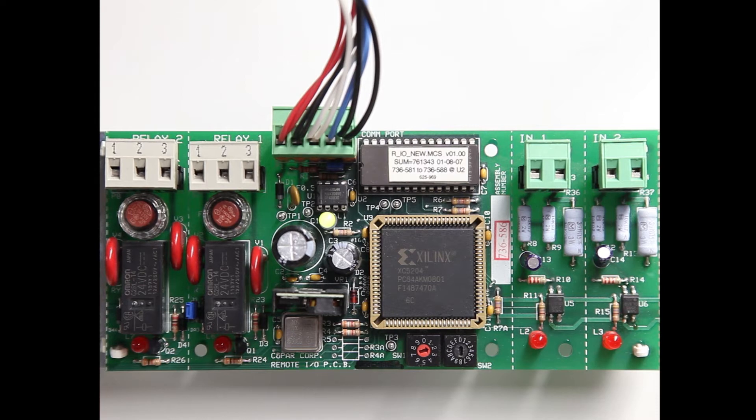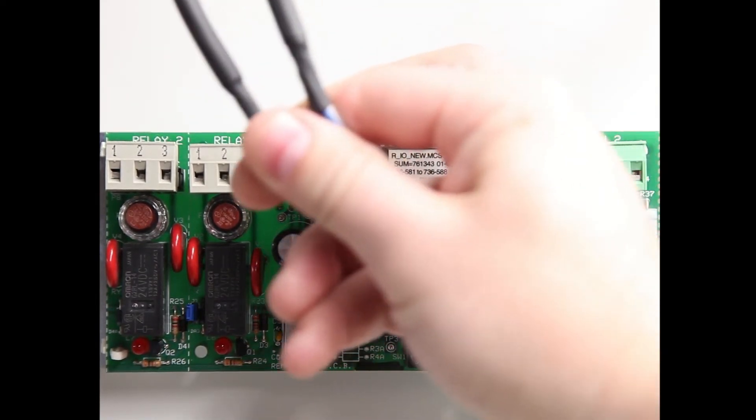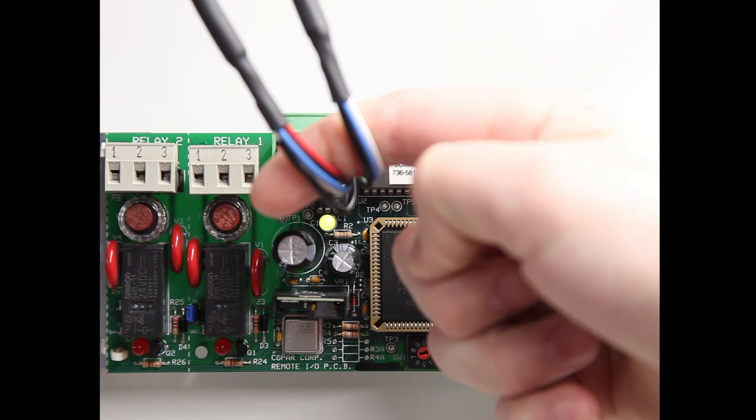In order to tell which card is the last card on the string, you can just look at the teal communication cable connected to the card. If there are two cables, it is not the last card on the string. If there is one cable, it is the last card.